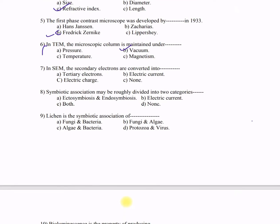Question 7: In SEM, the secondary electrons are converted into — A) tertiary electrons, B) electric current, C) electric charge, D) null. The correct option is B — electric current. In SEM, the scintillator accelerates the electrons and converts them into current, which can then be amplified by the photomultiplier.